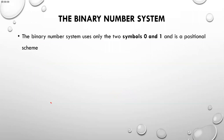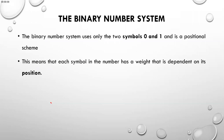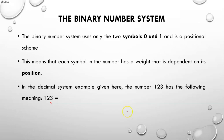The binary number system uses only two symbols, 0 and 1, and it is a positional scheme. This means that each symbol in the number has a weight that is dependent on the position of that symbol. We came across the example of 1, 2, 3.